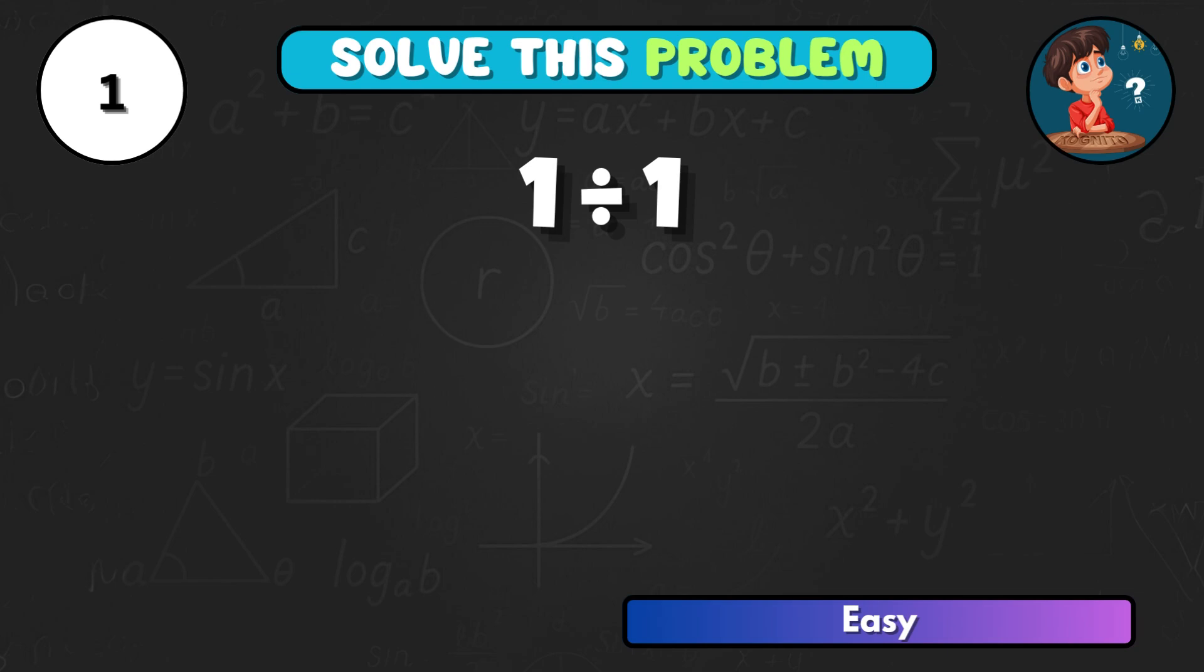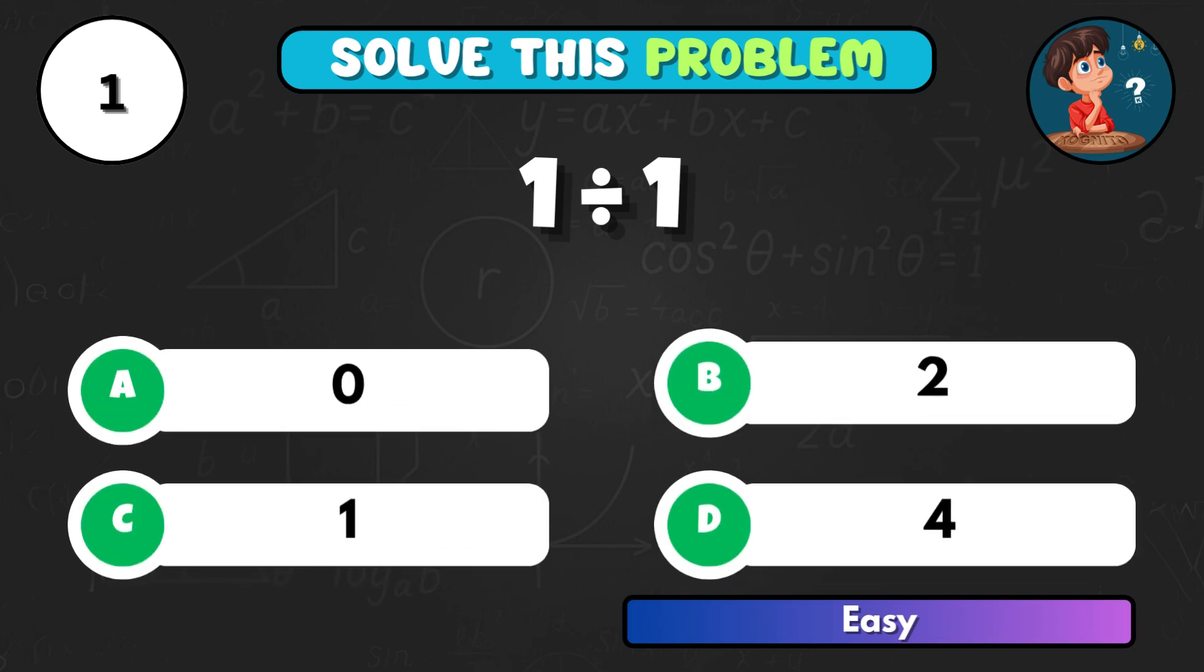Let's warm up with something simple. 1 divided by 1 equals what? The correct choice is C and the answer is 1.